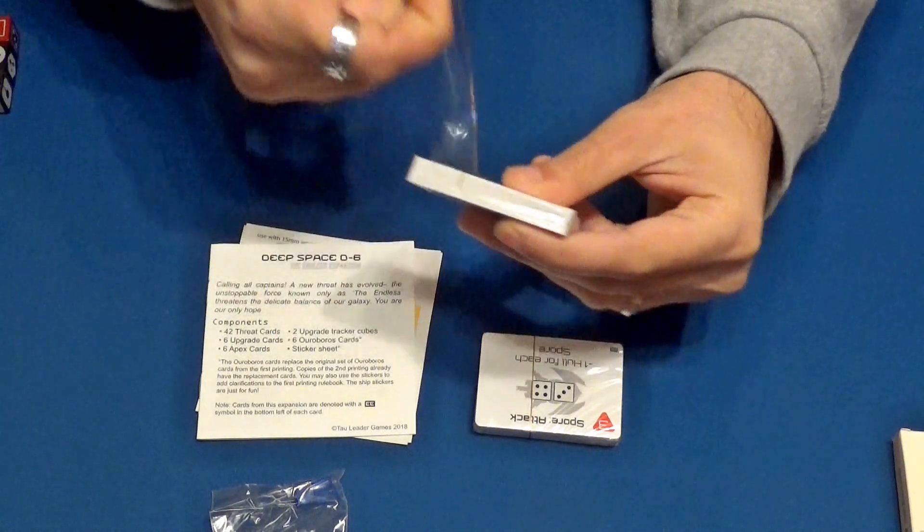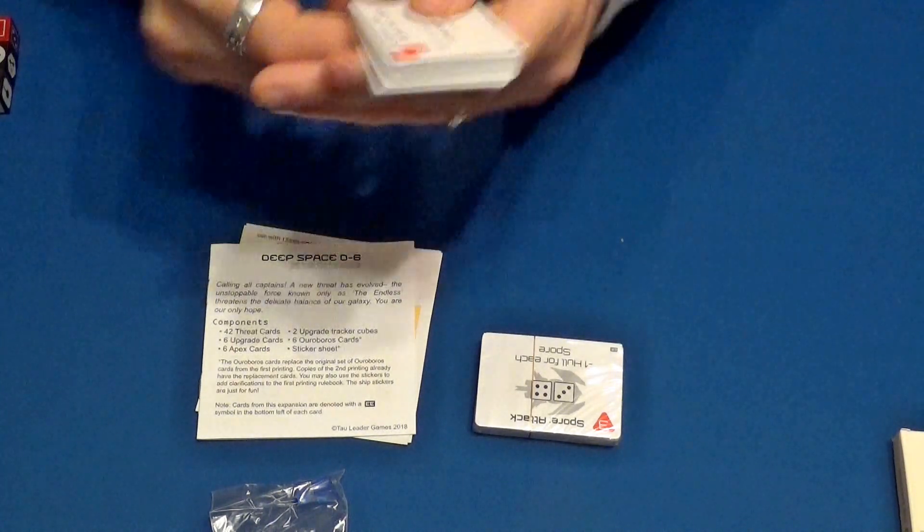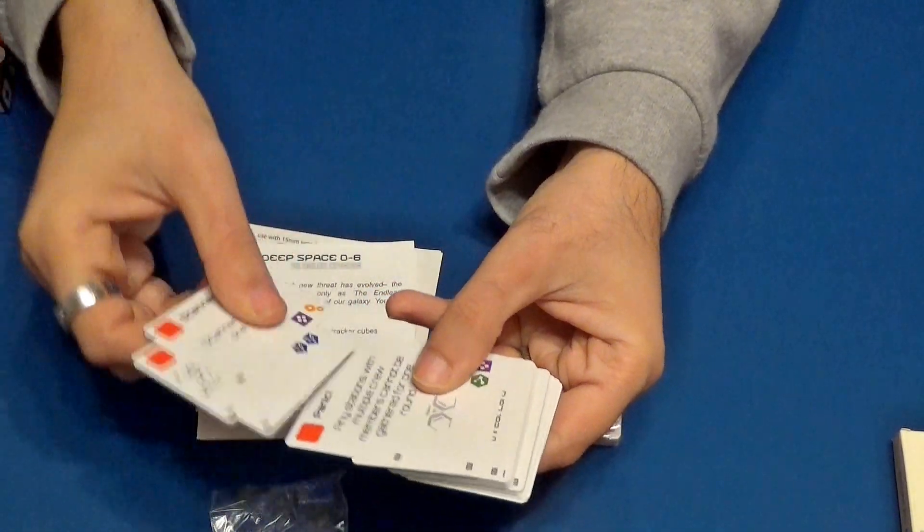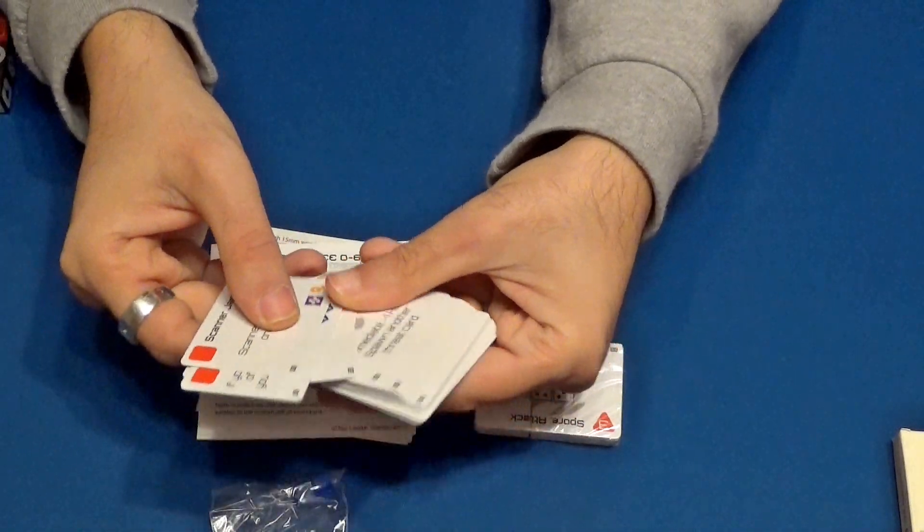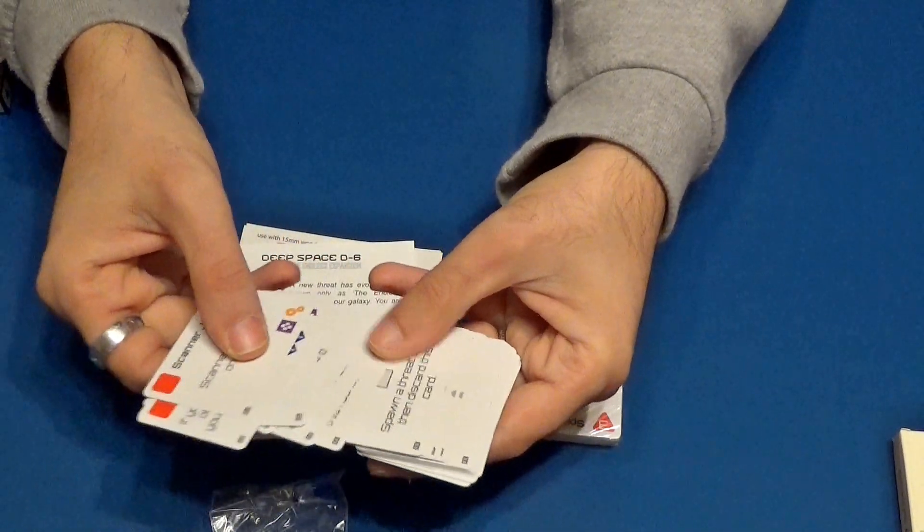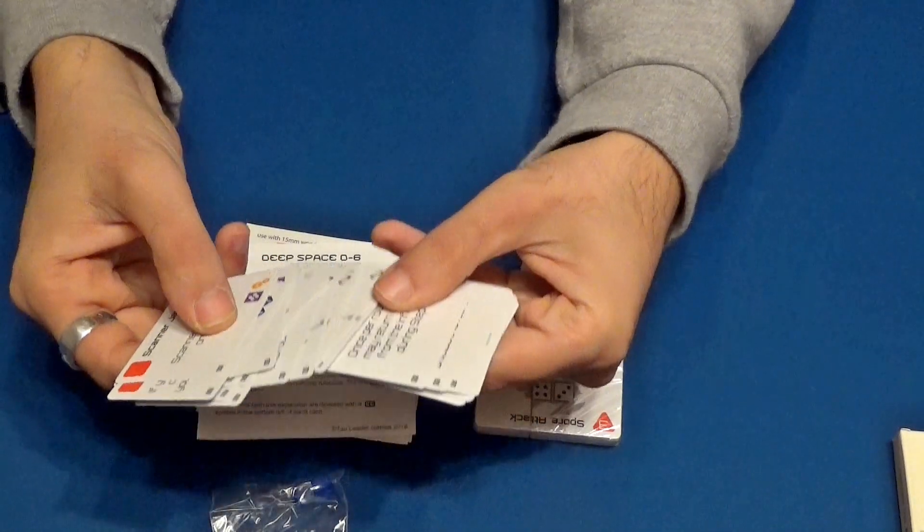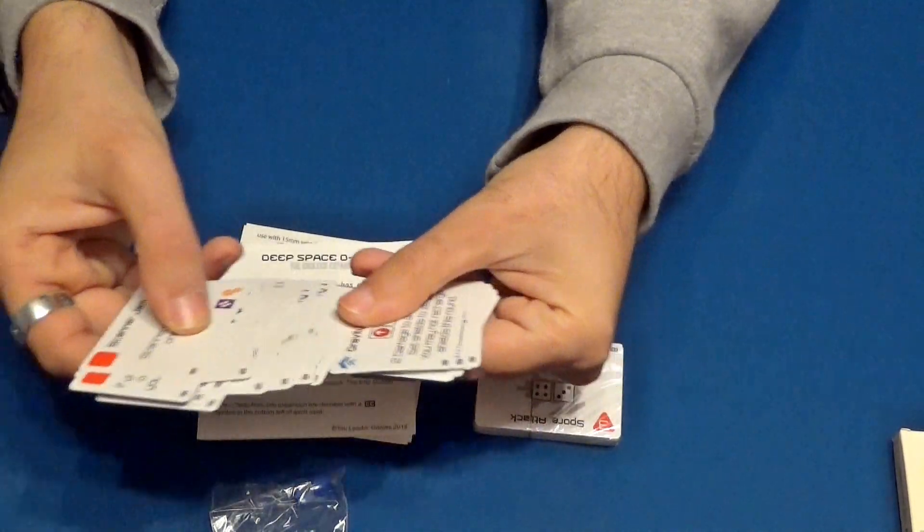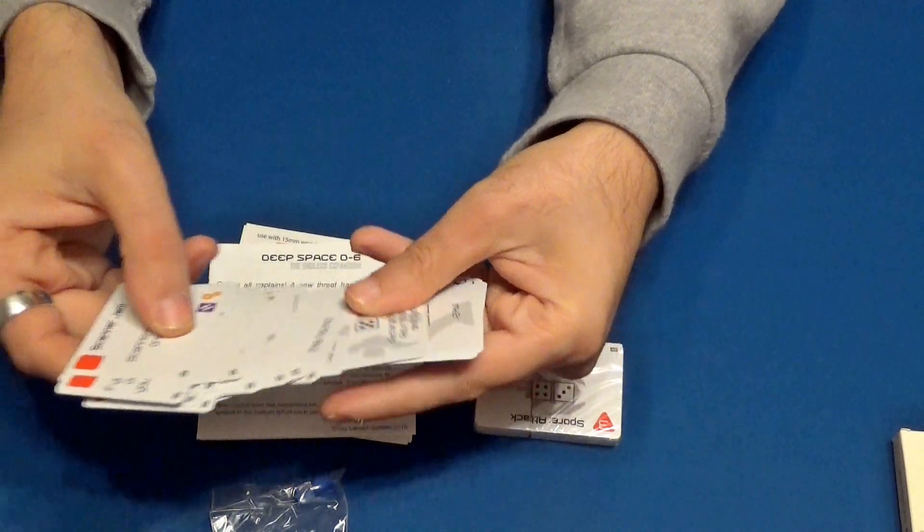Vamos a abrirlos. Aún el abre fácil funciona bien. Eso sí. Tenemos aquí las distintas cartas. Pues ellos son enemigos por lo que estoy viendo yo. Las cartas están así un poco como plastificadas. Están bien. Pero bueno, yo creo que todo esto podrá ir dentro ya directamente en la caja grande.